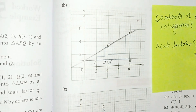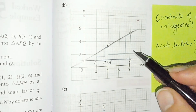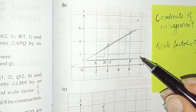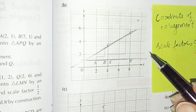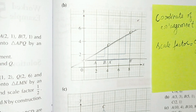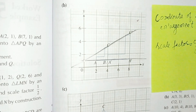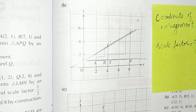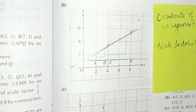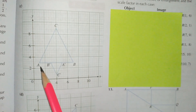The coordinate of the center of enlargement is zero and one. Now we have to find the scale factor: length of image divided by length of object. The length of C to C prime is one, two, three, four — that is four — and the length of C to B is one, two — that is two. We get a scale factor of two. Part number B is solved.